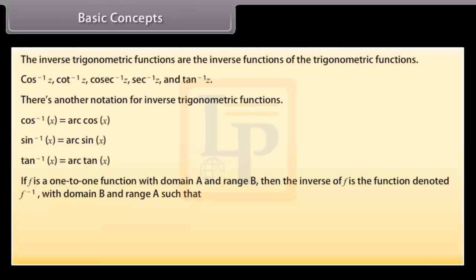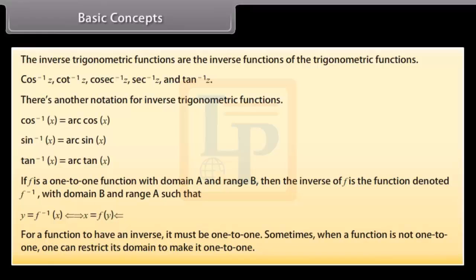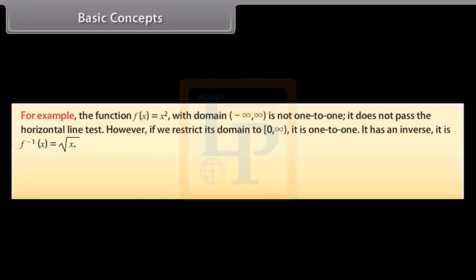Recall that if f is a one-to-one function with domain A and range B, then the inverse of f is the function denoted f⁻¹ with domain B and range A, such that y = f⁻¹(x) if and only if x = f(y). For a function to have an inverse, it must be one-to-one. For example, f(x) = x² with domain (-∞, ∞) is not one-to-one. However, if we restrict its domain to [0, ∞), it is one-to-one and its inverse is f⁻¹(x) = √x.